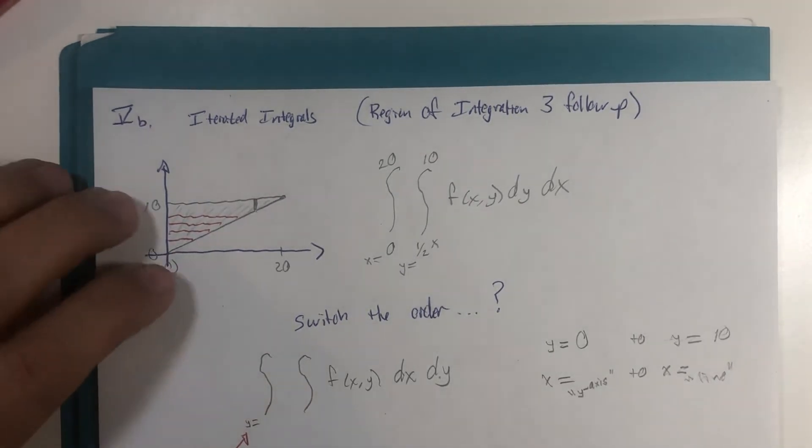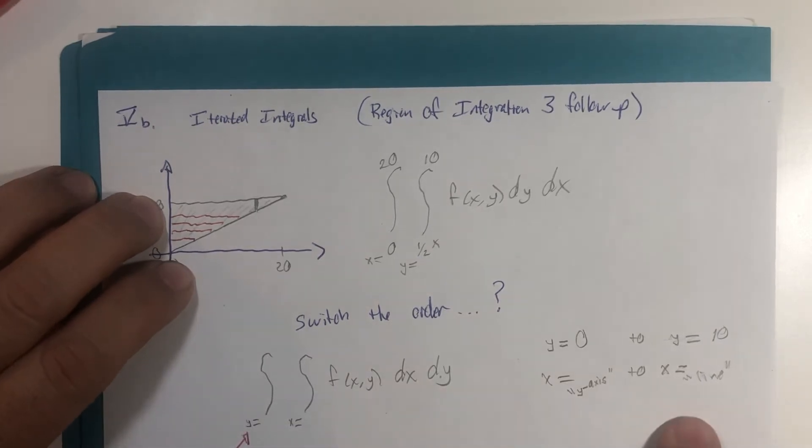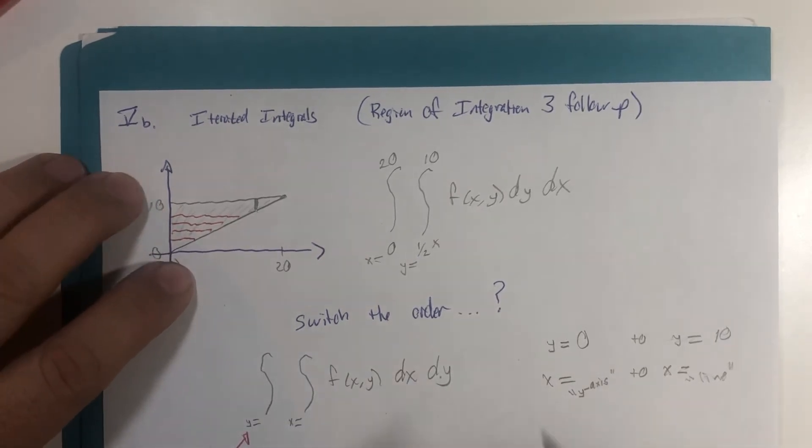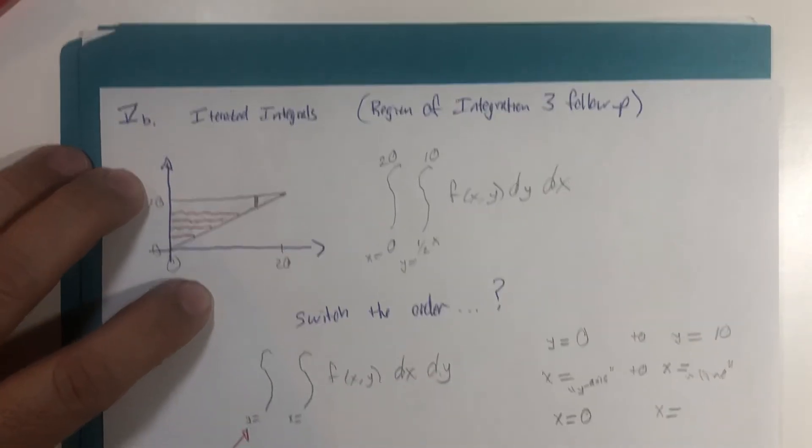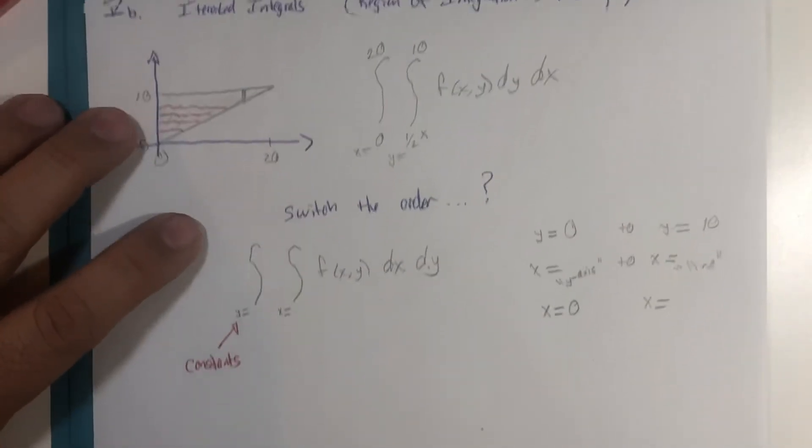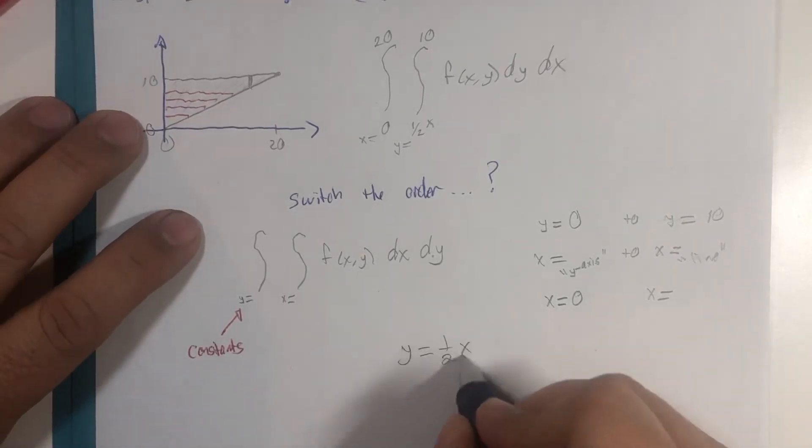But what I know is I need to write these in the form of x equals. Well, the y-axis equation is x is 0. And the line's equation, well, I haven't found it yet. y equals 1 half x was the equation of the line. If we solve for x, that's right, x is 2y.